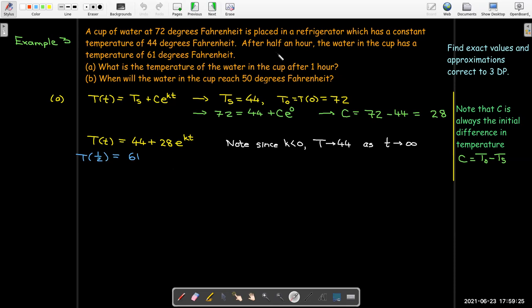So we're told that after half an hour, the temperature is 61. So let me put that information into my equation. So that says 61 equals 44 plus 28 e to the one half k. And 61 minus 44 is 17. Now, I still have to divide both sides by 28. I want to get the exponential part by itself. So e raised to the one half k is 17 over 28.